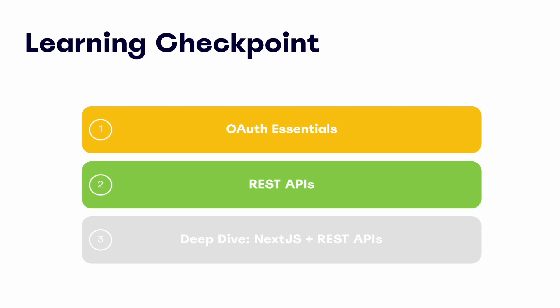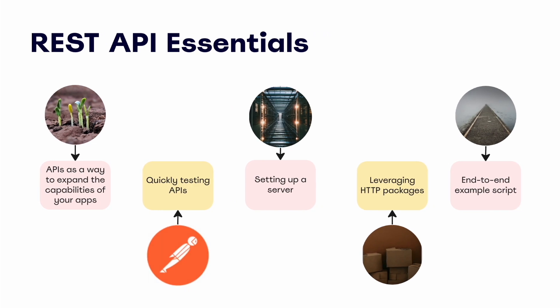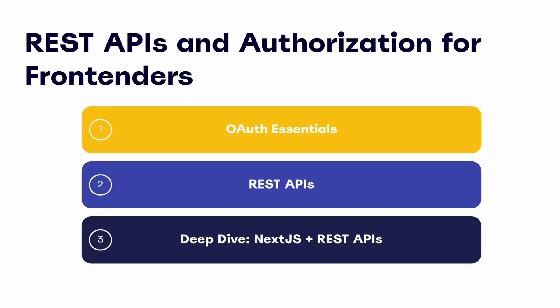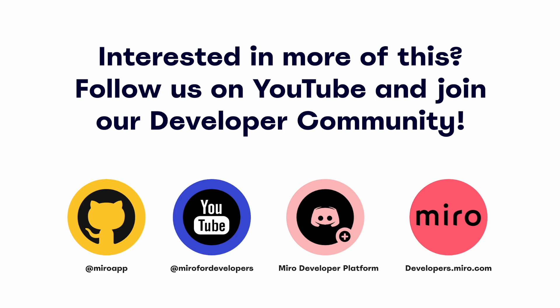We've covered a lot at this point — from REST API's role in front-end development to an end-to-end example in Node.js. We built a solid foundation for understanding REST APIs and their value. Here's a quick look back at what we've covered: APIs as a way to expand the capabilities of your apps, quickly testing APIs, setting up a server, leveraging HTTP packages, and an end-to-end example script. If you've found this module on REST API essentials helpful, the final part of this series will build on the foundation we've laid so far, taking a deep dive into a front-end app and bringing together everything we covered in the first two parts of this series. Follow us on YouTube for more developer tutorials and join our developer community on Discord. See you around!